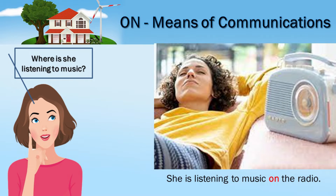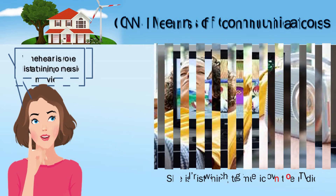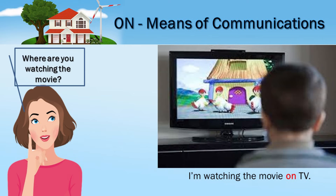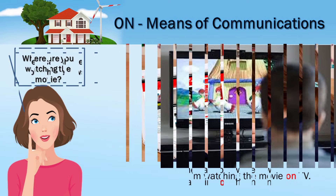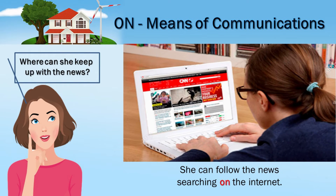On — means of communications. Where is she listening to music? She is listening to music on the radio. Where are you watching the movie? I'm watching the movie on TV. Where can she keep up with the news? She can follow the news searching on the internet.